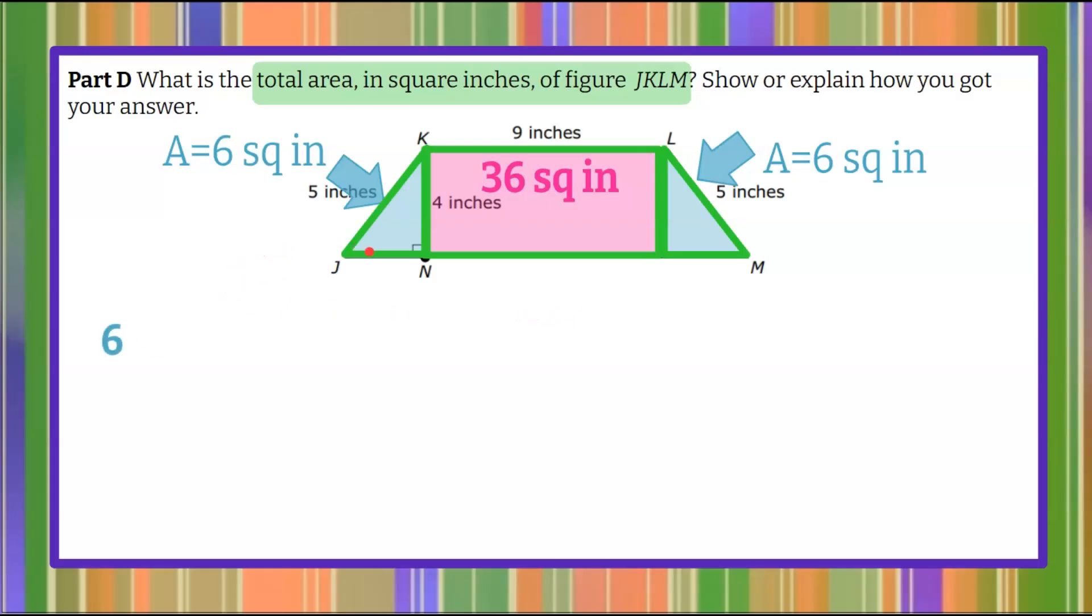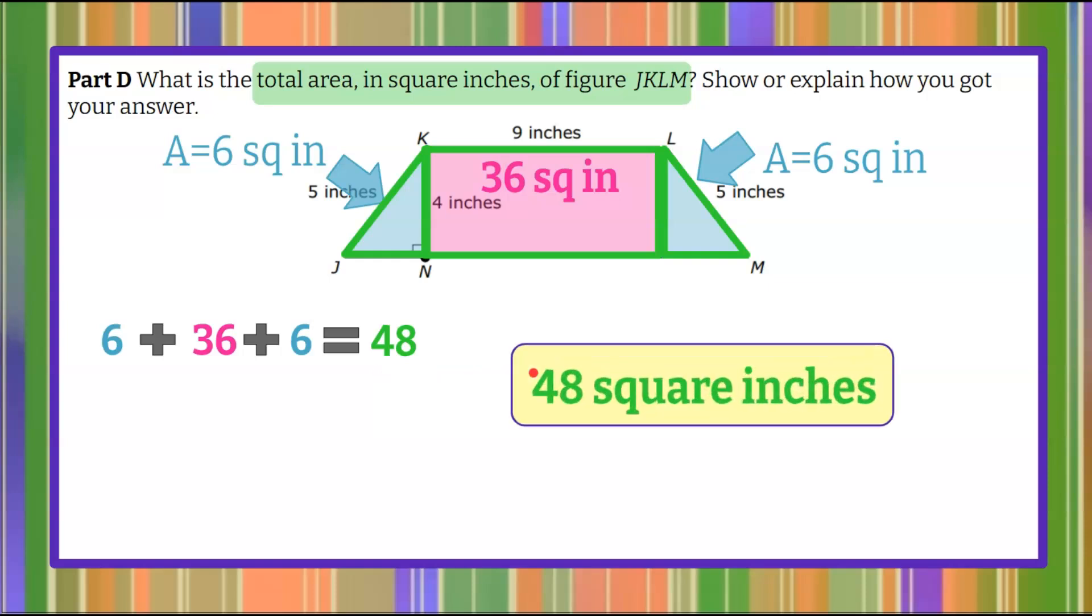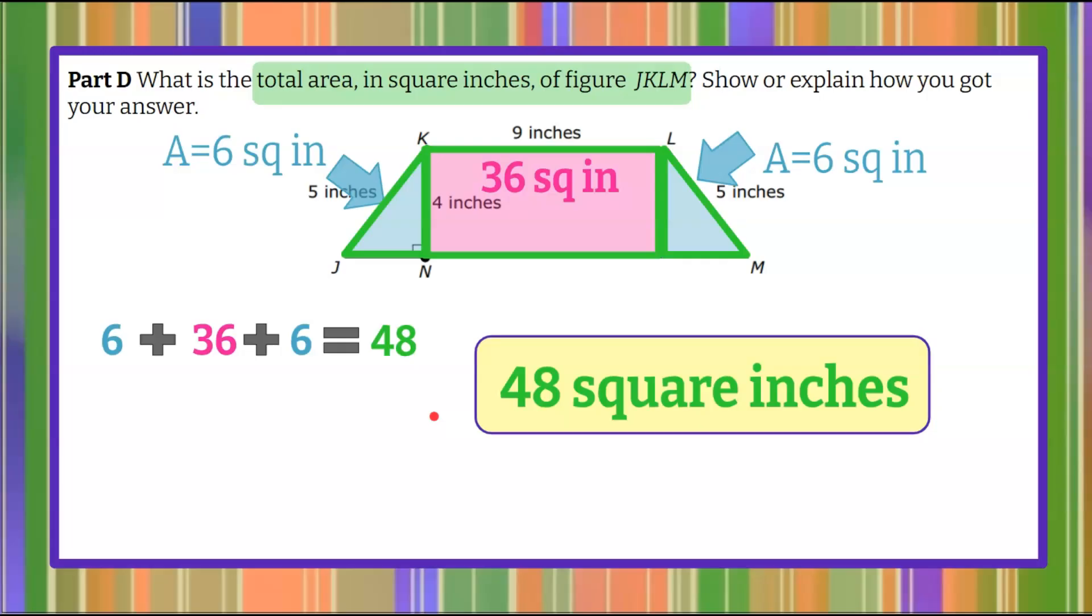So we know that the area of the triangle is 6, add the area of our rectangle which is 36, add the last triangle which is 6, and when we add those all together, 6 plus 36 plus 6 has a sum of 48, so the entire trapezoid is 48 square inches in area.